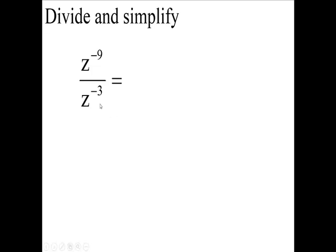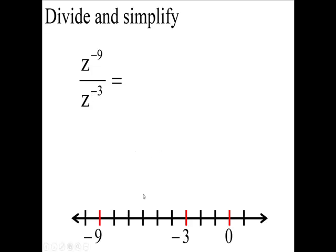what we need to do is look at the number negative 9 and negative 3 on a number line. Okay, so here's negative 3, and there's negative 9. Now which of these two numbers is the smallest?